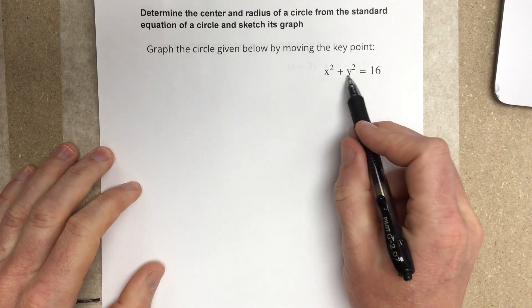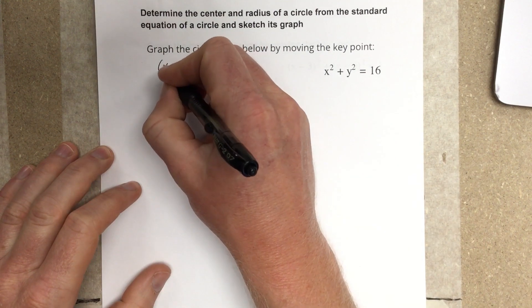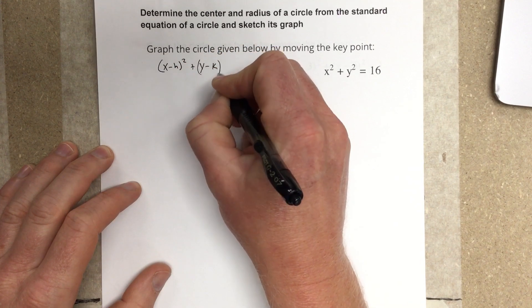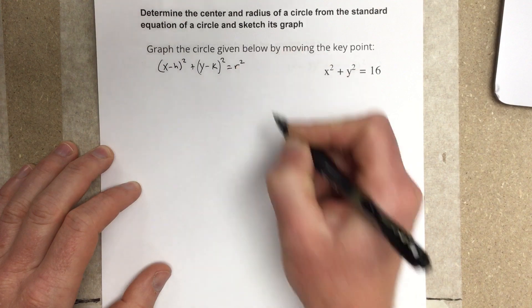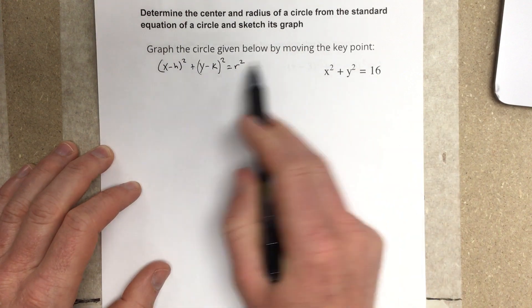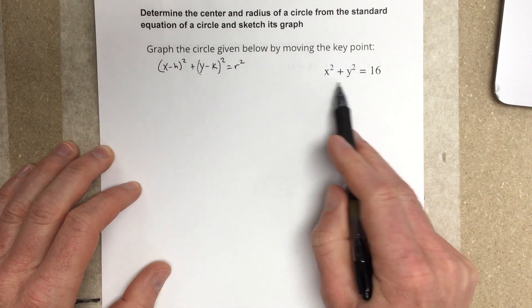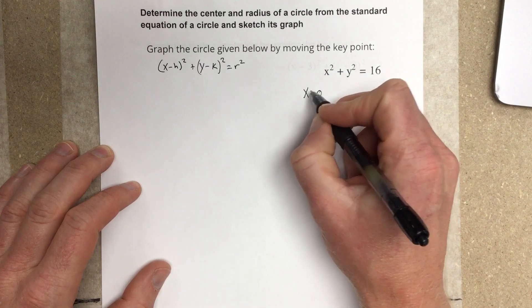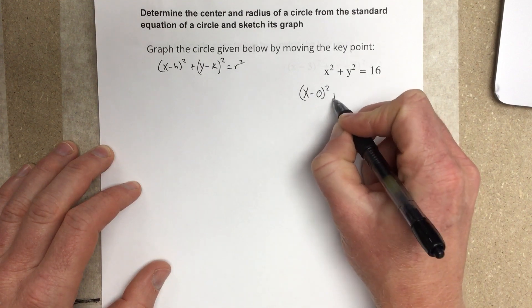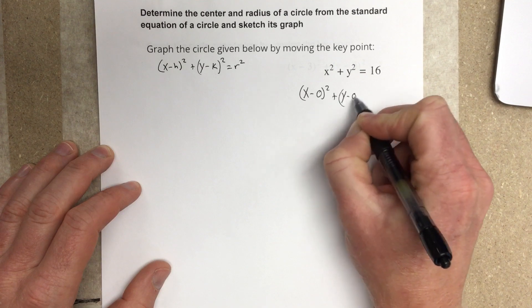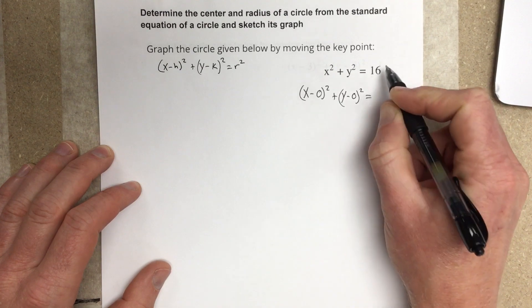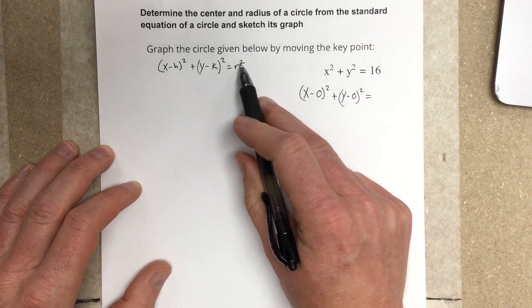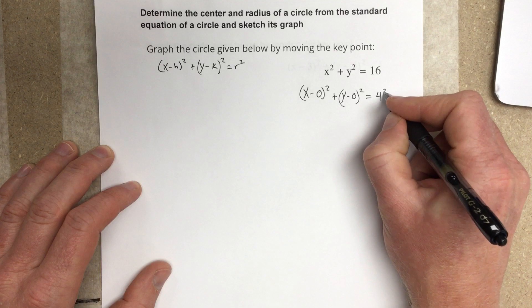The standard equation for a circle is (x - h)² + (y - k)² = r². You'll notice we don't have an h or a k in this equation, but if we had them there, it would be (x - 0)² + (y - 0)² equals, and if I wrote this instead of 16 in r squared terms, this would actually be 4 squared.